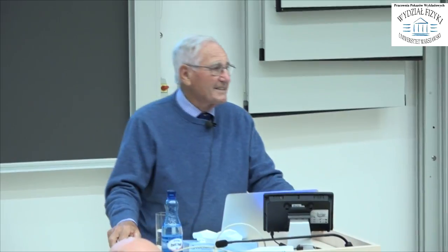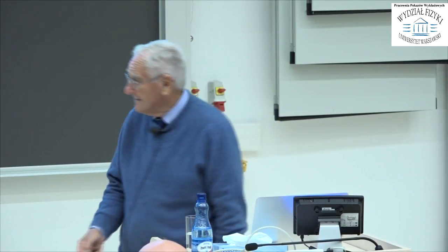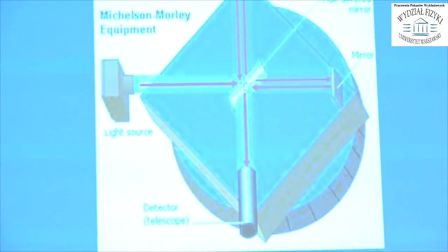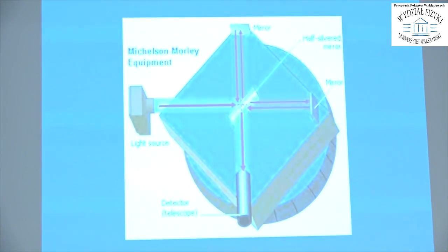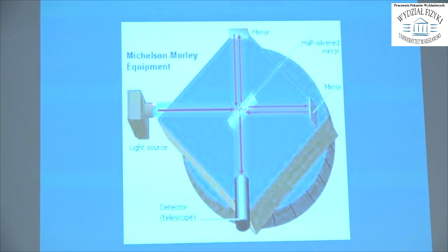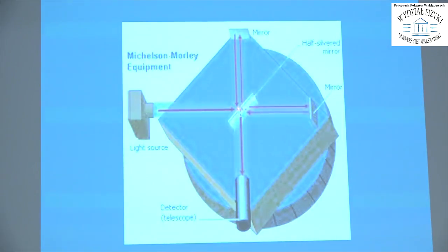When did relativity start? It really started in 1887 with the Michelson-Morley experiment. The idea was that the Earth is moving in the ether — in those days, they believed there was a permanent ether that everything moved in. Since the Earth was moving around the Sun, it must be moving in the ether, and they wanted to measure the velocity. As all physics students know, the velocity was zero.